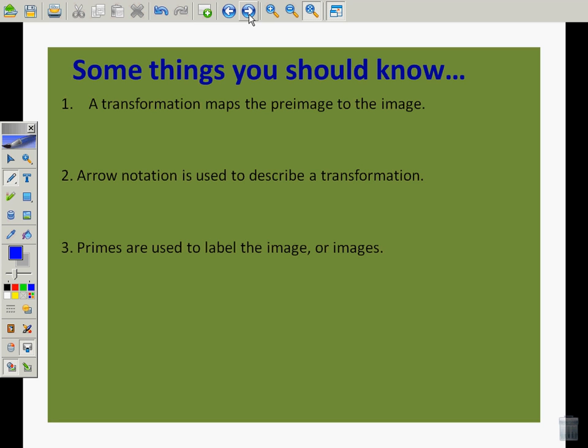Some more of the basics: a transformation maps the image to the preimage. We're going to signal this with an arrow to signal change. Arrow notation is used to describe the transformation. We might say ABC goes to A prime, B prime, C prime.